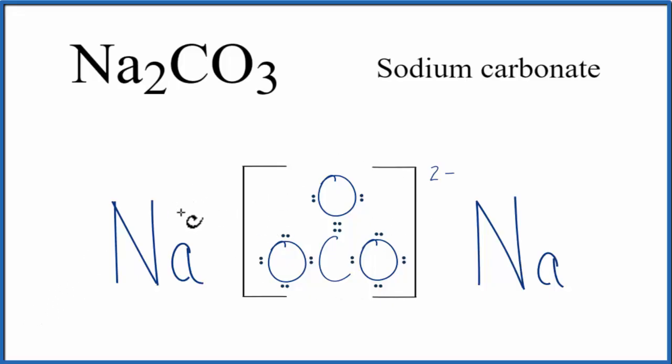Since it's lost that electron, it now has a positive charge. This sodium also. Since each of these sodiums lost one electron, the carbonate gained them. Because it gained two negative charges, it has this two minus charge.